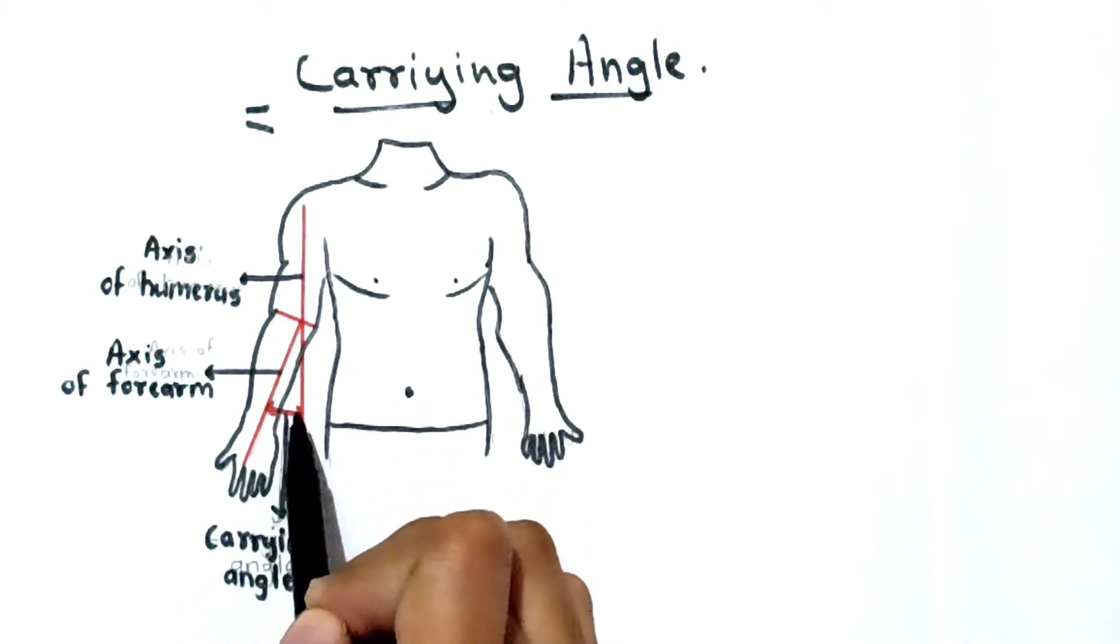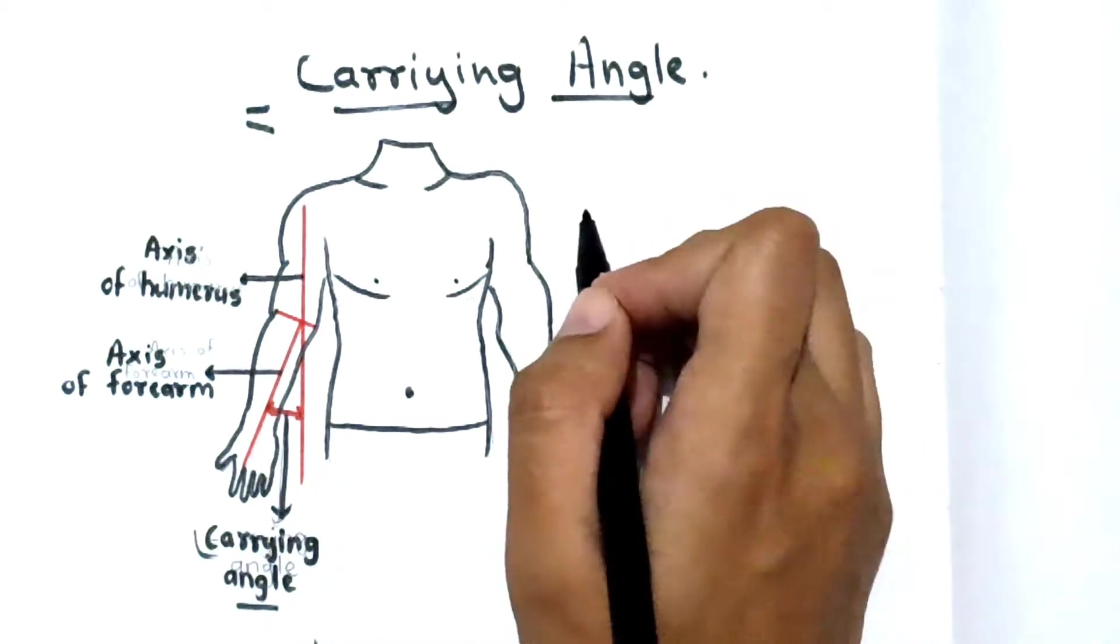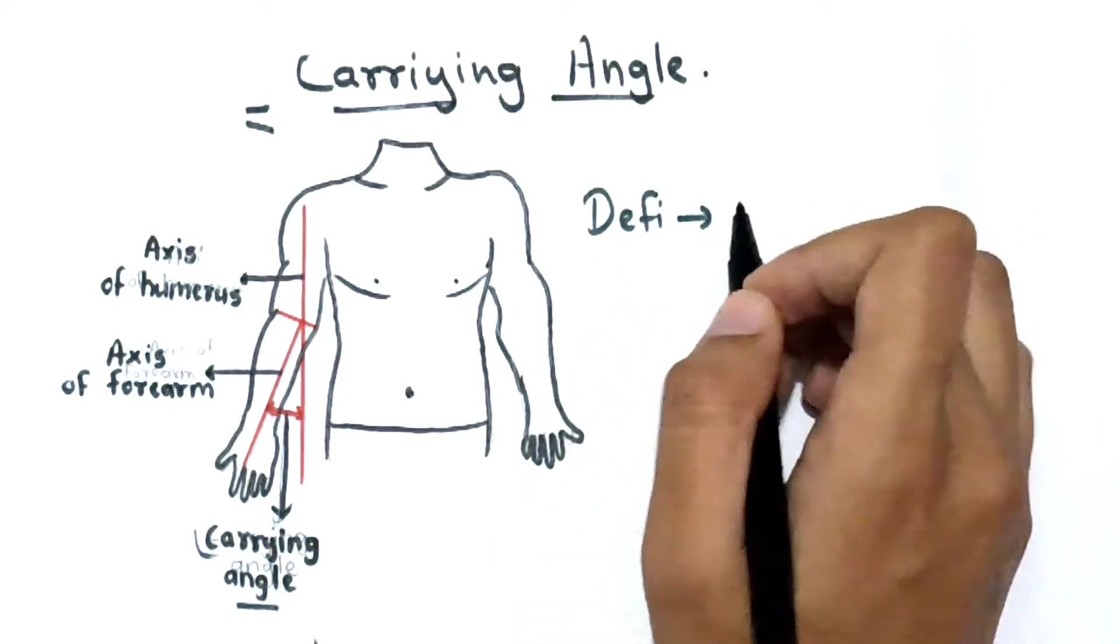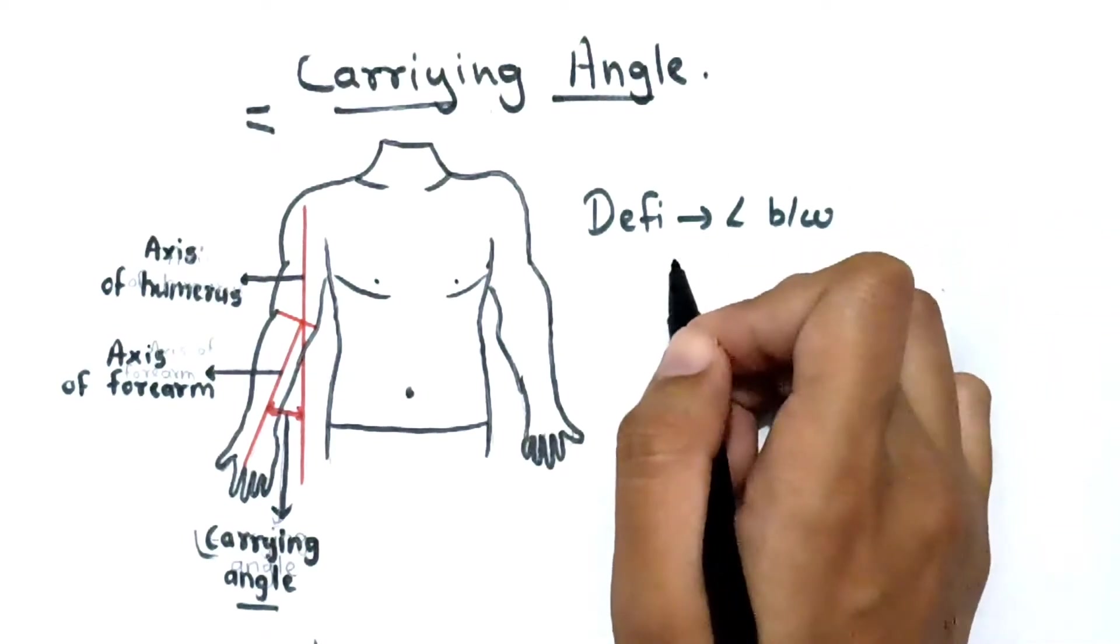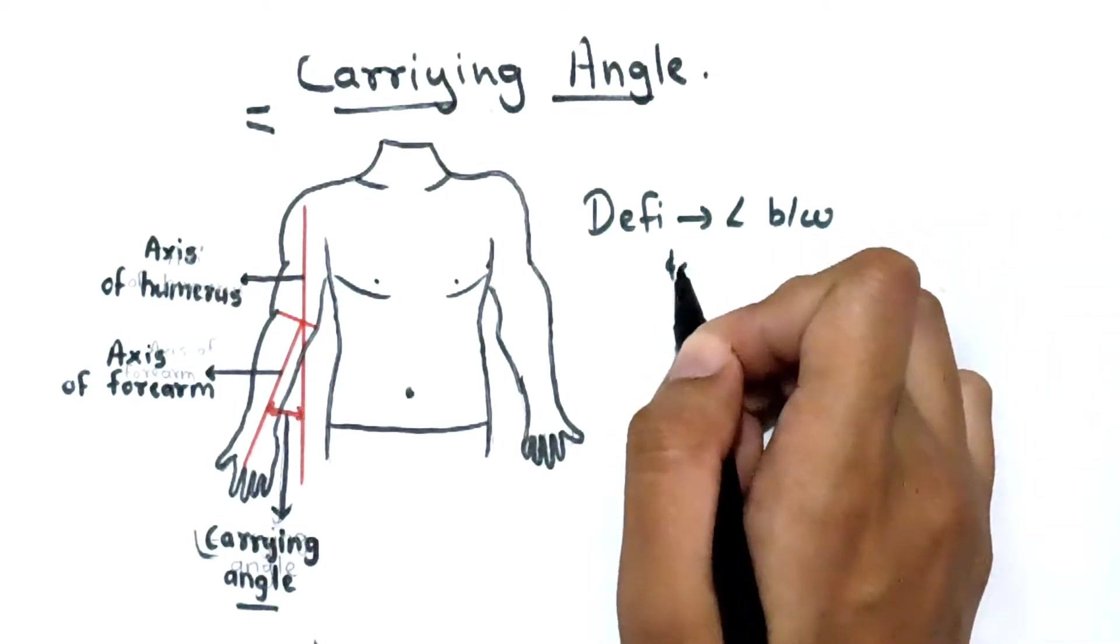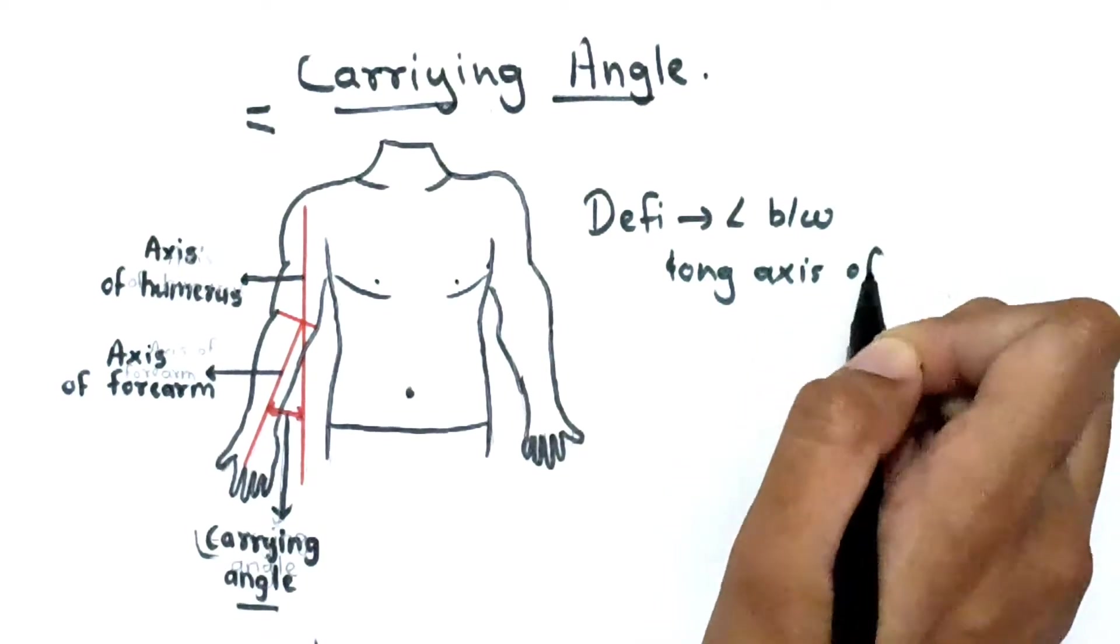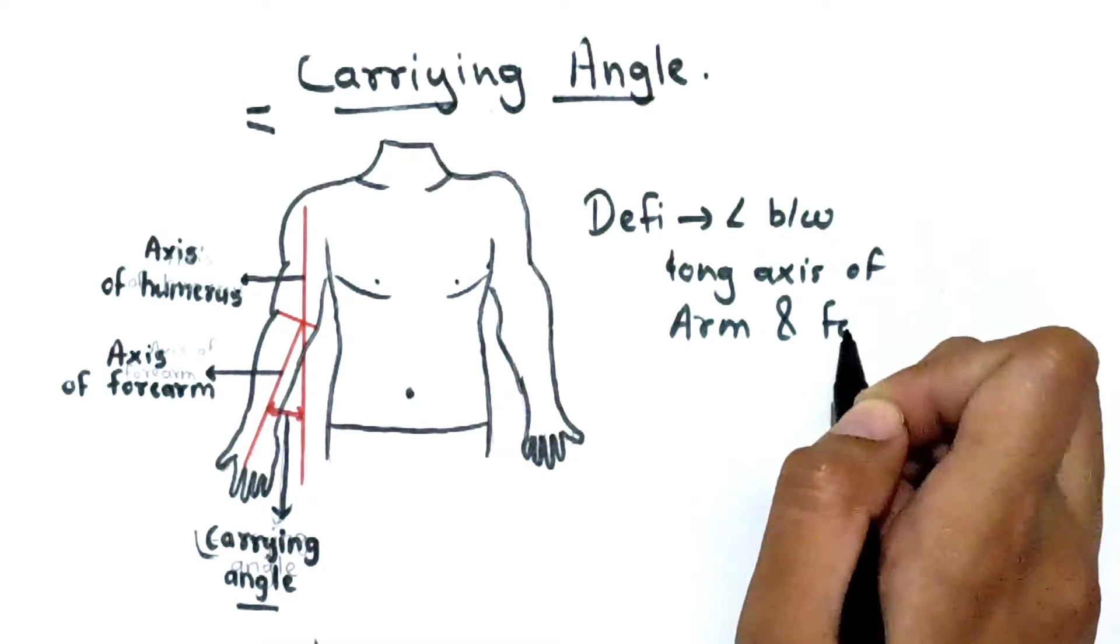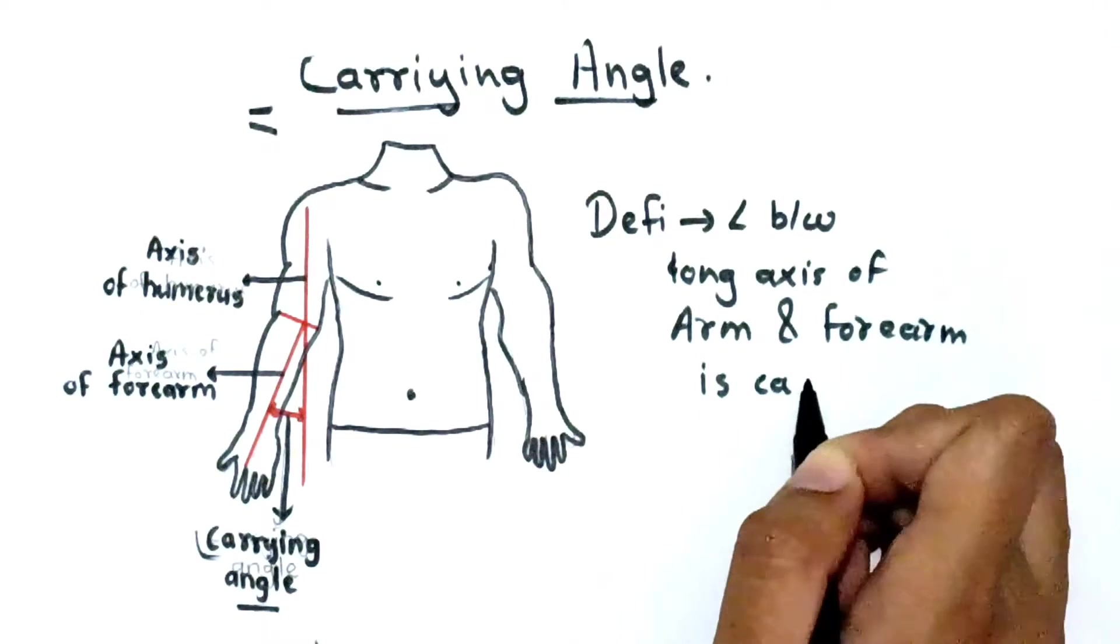So the angle between the axis of your arm and forearm is known as the carrying angle. Definition is: angle between long axis of arm and forearm is carrying angle.